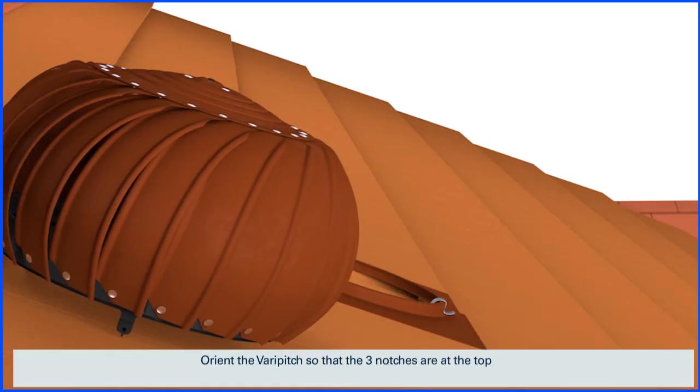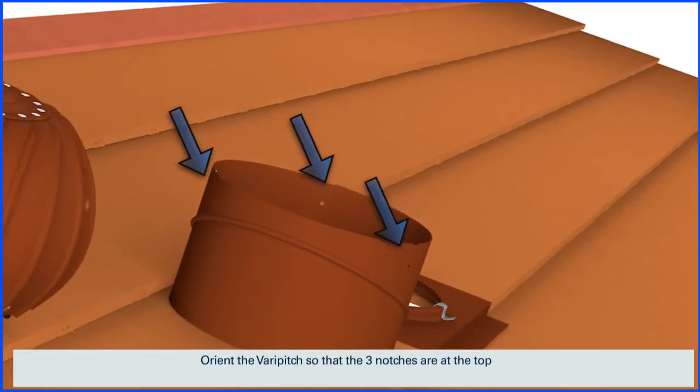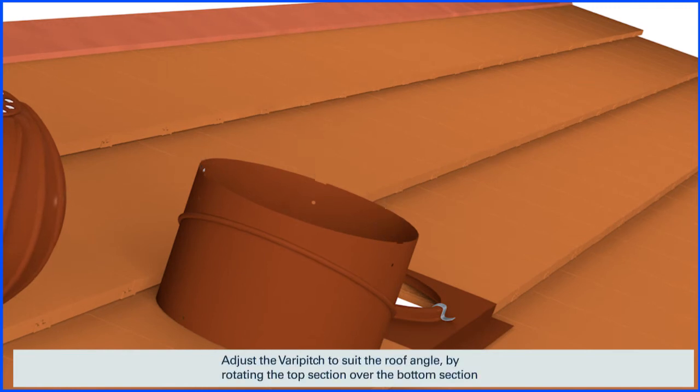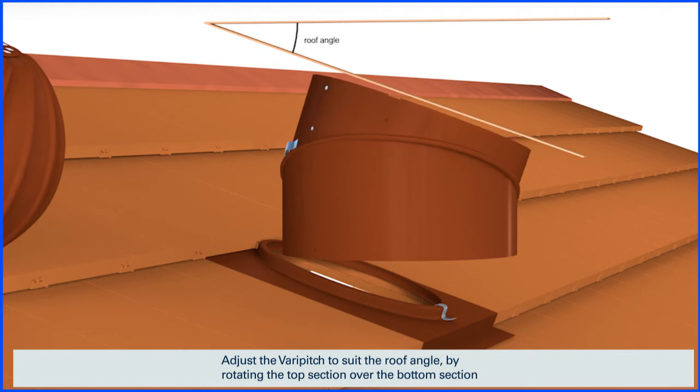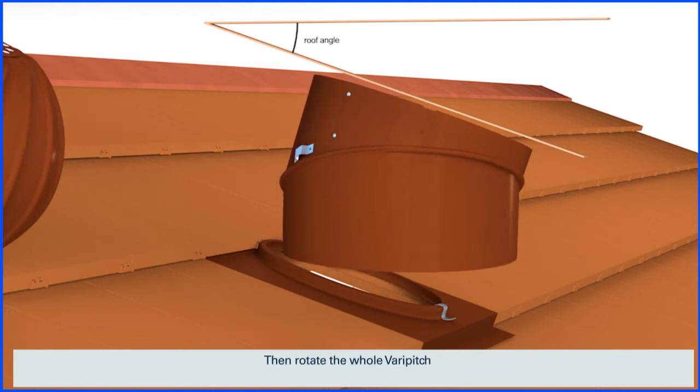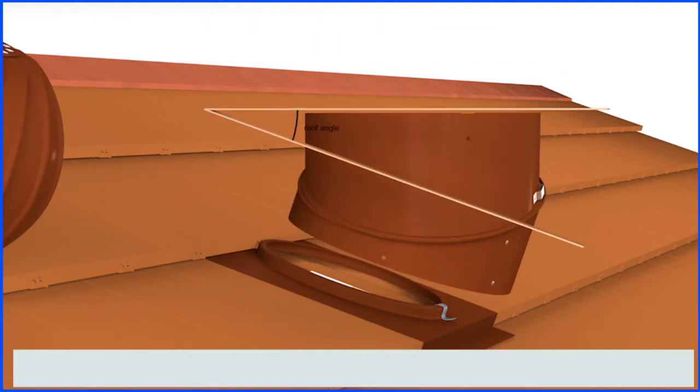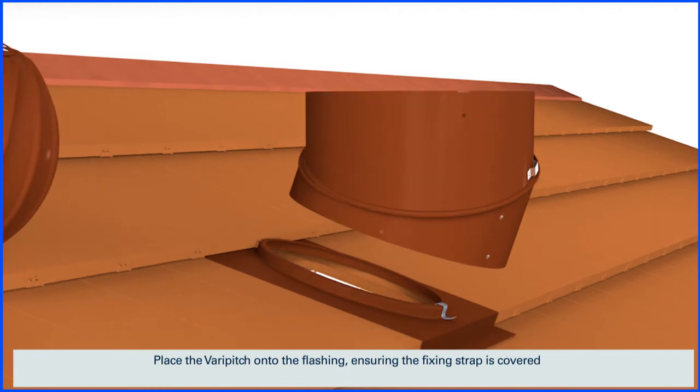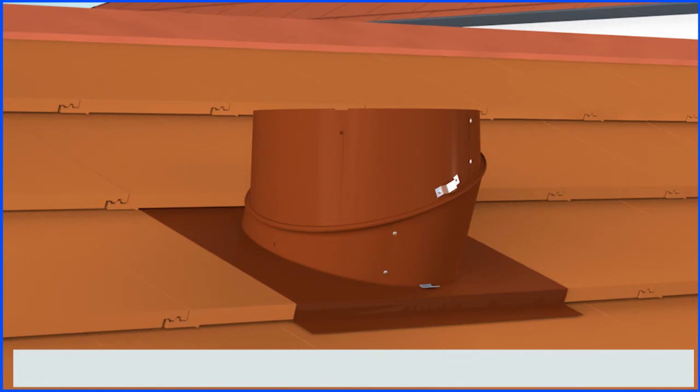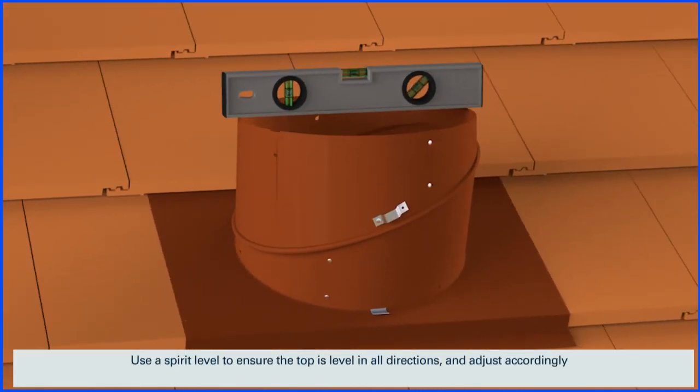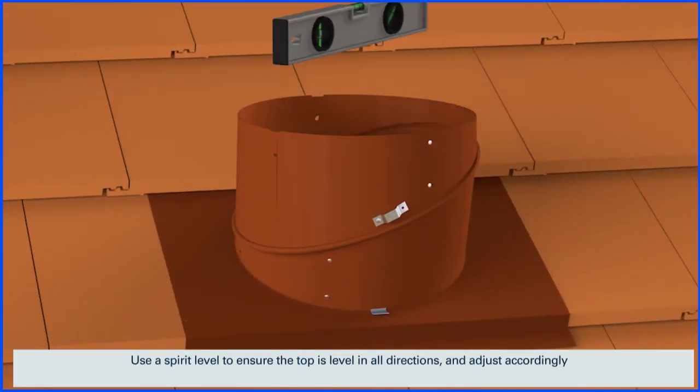Orient the VeriPitch so that the three notches are at the top. Adjust the VeriPitch to suit the roof angle by rotating the top section over the bottom section, then rotate the whole VeriPitch. Place the VeriPitch onto the flashing, ensuring the fixing strap is covered. Use the spirit level to ensure the top is level in all directions and adjust accordingly.